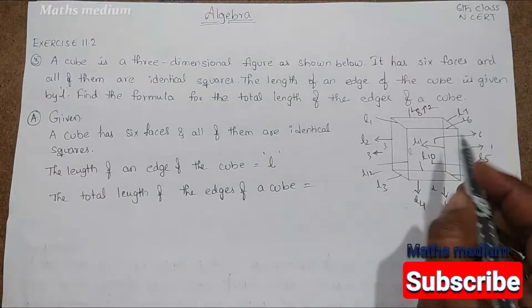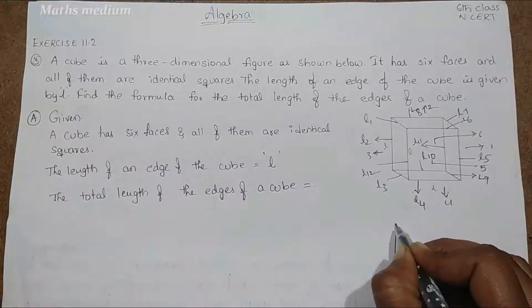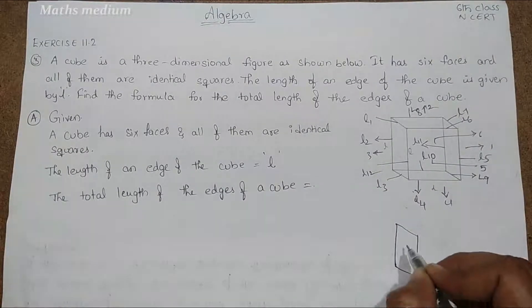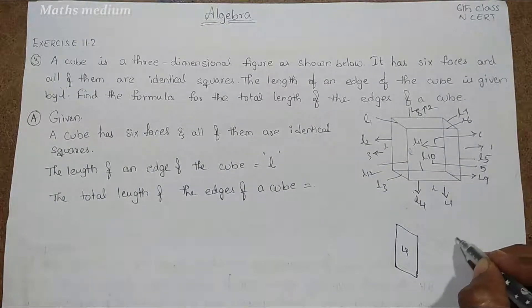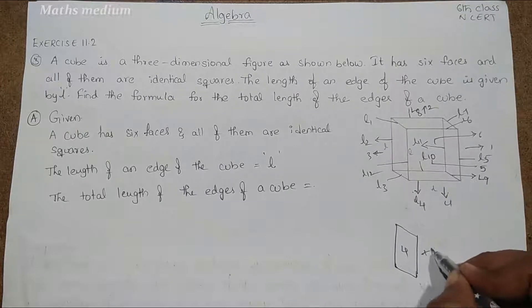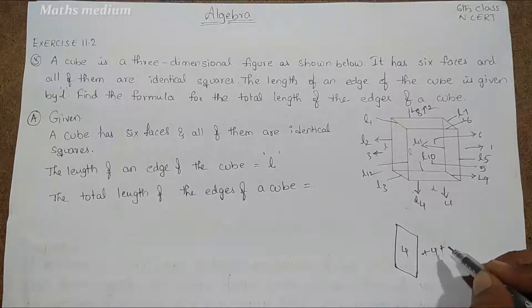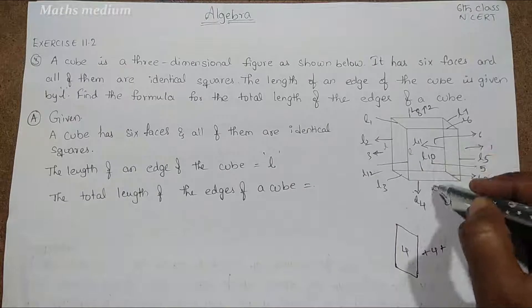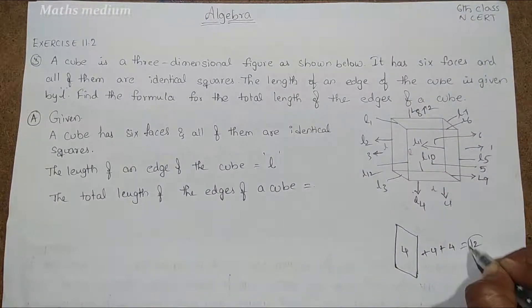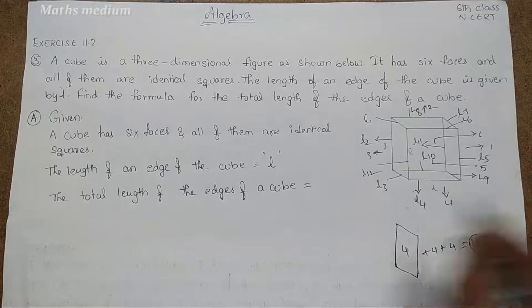If you see like this, it has 4. If you see another side, plus 4. If you see remaining 1, 2, 3, 4. Three 4's are 12. So 12 sides, 12 edges are there.